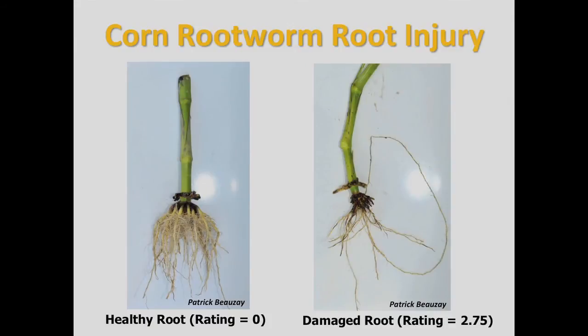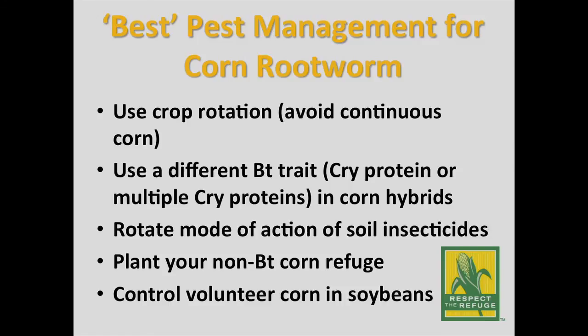To help delay the development of corn rootworm resistance to BT, consider the following pest management strategies: avoid continuous corn and rotate corn with other non-corn rootworm hosts such as soybean, wheat, sunflower, and flax; use a different BT trait in BT corn hybrids; rotate the modes of action of soil insecticides; plant your non-BT corn refuge; and control any volunteer corn in soybeans.